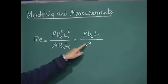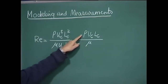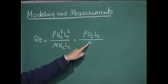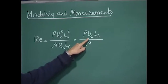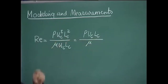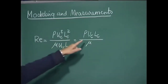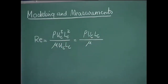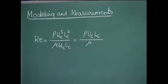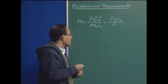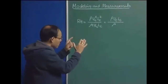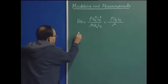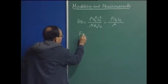Here ρ and μ are respectively the density and viscosity of the melt. Uc is the characteristic velocity, and Lc is the characteristic length — the velocity and length scale of the system that are relevant for the present analysis. I am going to explain that a bit more when I write it down.